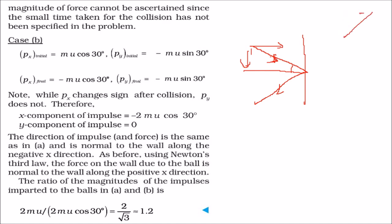if you have any direction like this, x component is this and y component is this. In this case, we have x component and this is the y component. So, x component will be MU cos theta and y component will be minus MU sin theta.